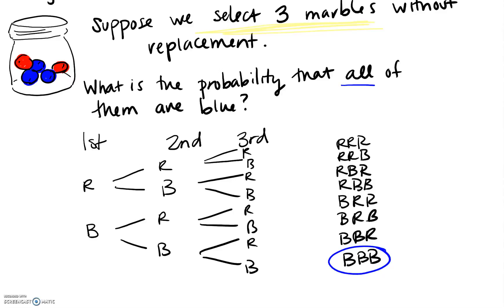We just need to figure out what these probabilities are. The first marble is a pretty straightforward classic probability question. We know that three of the marbles are blue and there are a total of five marbles, so classic probability tells us there's a three out of five chance that our first marble is blue.